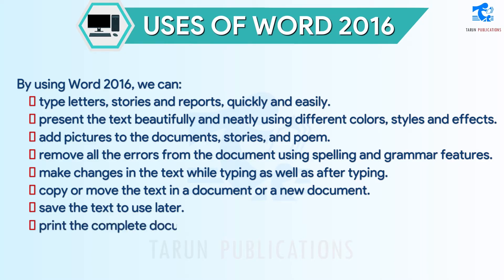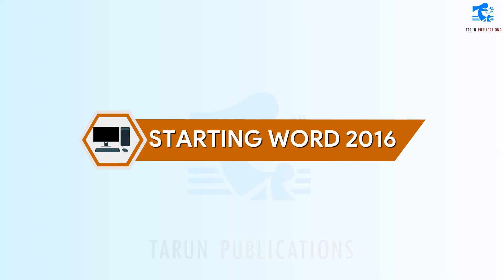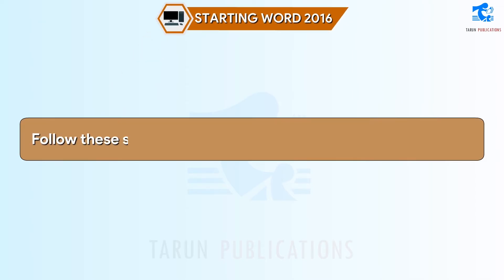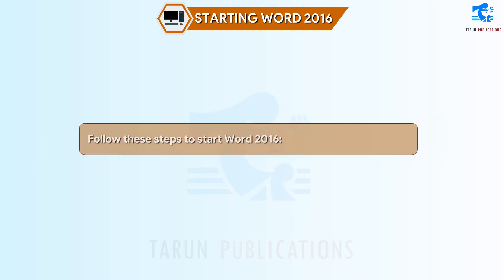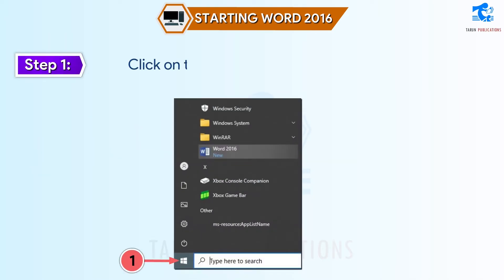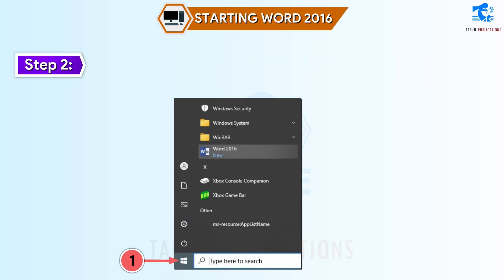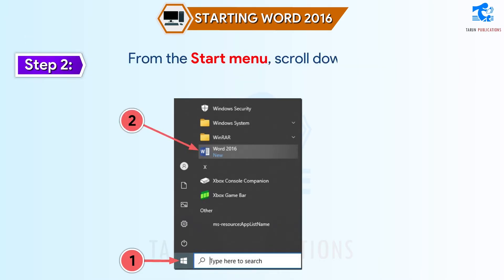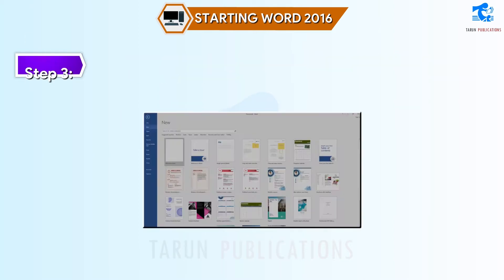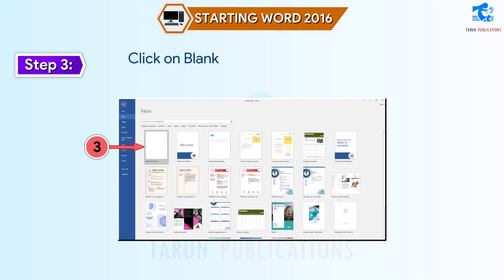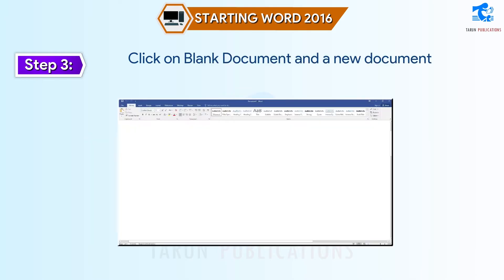We can print the complete document or a part of it. Starting Word 2016: follow these steps to start Word 2016. Step 1: click on the Start button on the taskbar. Step 2: from the Start menu, scroll down to the letter W and select Word. Step 3: click on Blank Document and a new document appears.